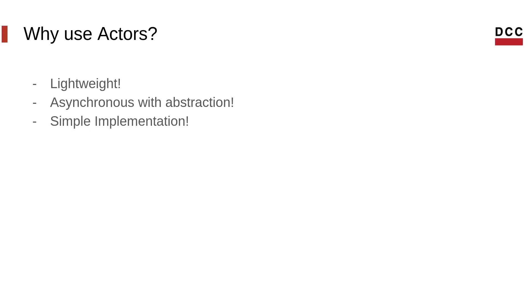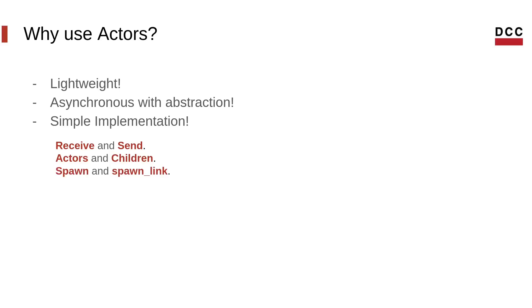It has a very simple implementation. To implement things in Elixir's actors model you only need to remember three pairs of things. First is receive and send, so that you can receive and send messages. Second are the actors and their children, which form the objects of our model. And finally spawn and spawn_link, which are able to create the actors that we use.